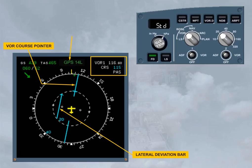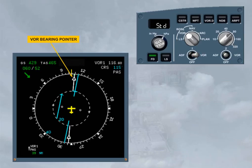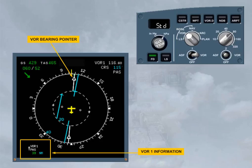Let's now display the VOR bearing pointer. Select VOR1 — click on ADF VOR selector 1. Notice that there is a white VOR bearing pointer and VOR information associated with the pointer. This information is available even if a course hasn't been selected on the MCDU RadNav page. The number 1 pointer is represented by a single line. Let's change the selection on the EFIS control panel to display ADF1 instead of VOR1.